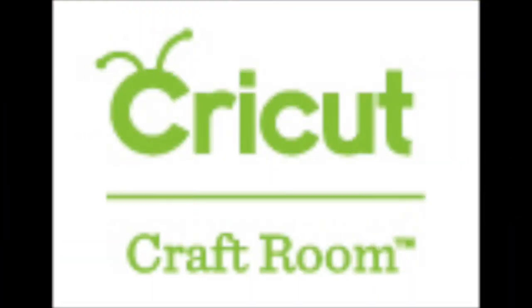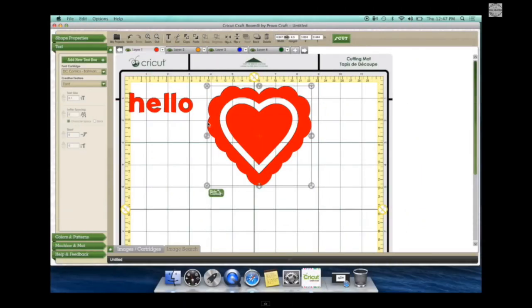The next thing we need to look at is the design programs that come with both these machines. The Expression 2 can be used as a standalone machine with your cartridges. Or you can download Cricut Craft Room to design with your computer. Cricut Craft Room was the first design program to be used with a computer for Cricut. It was an okay program to begin with.